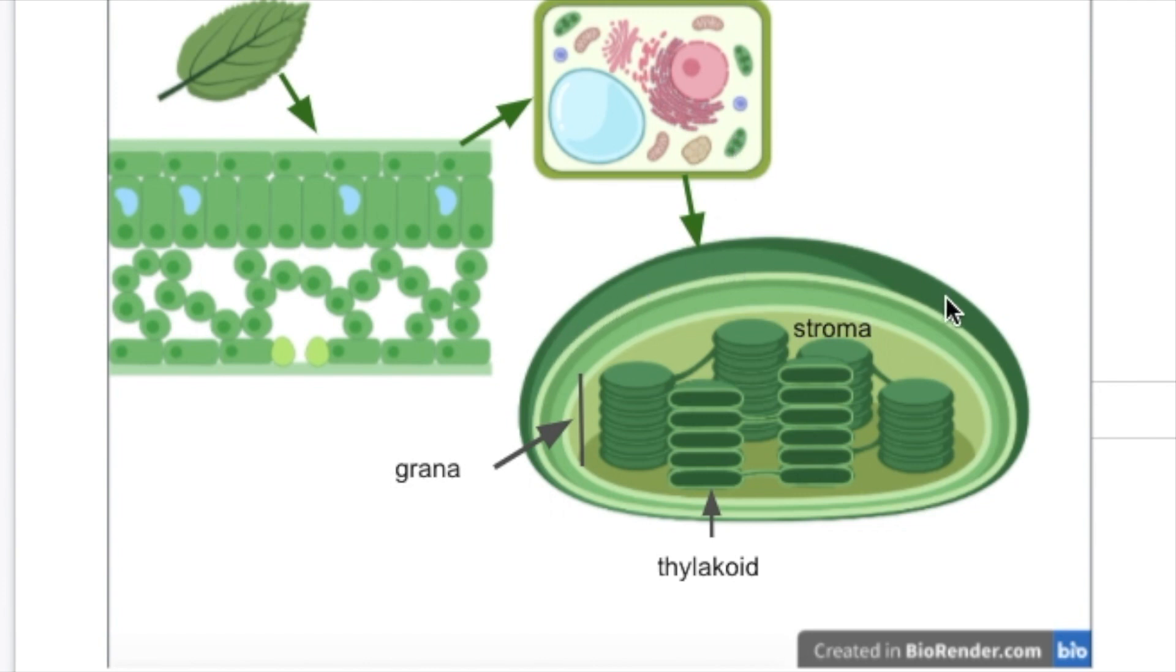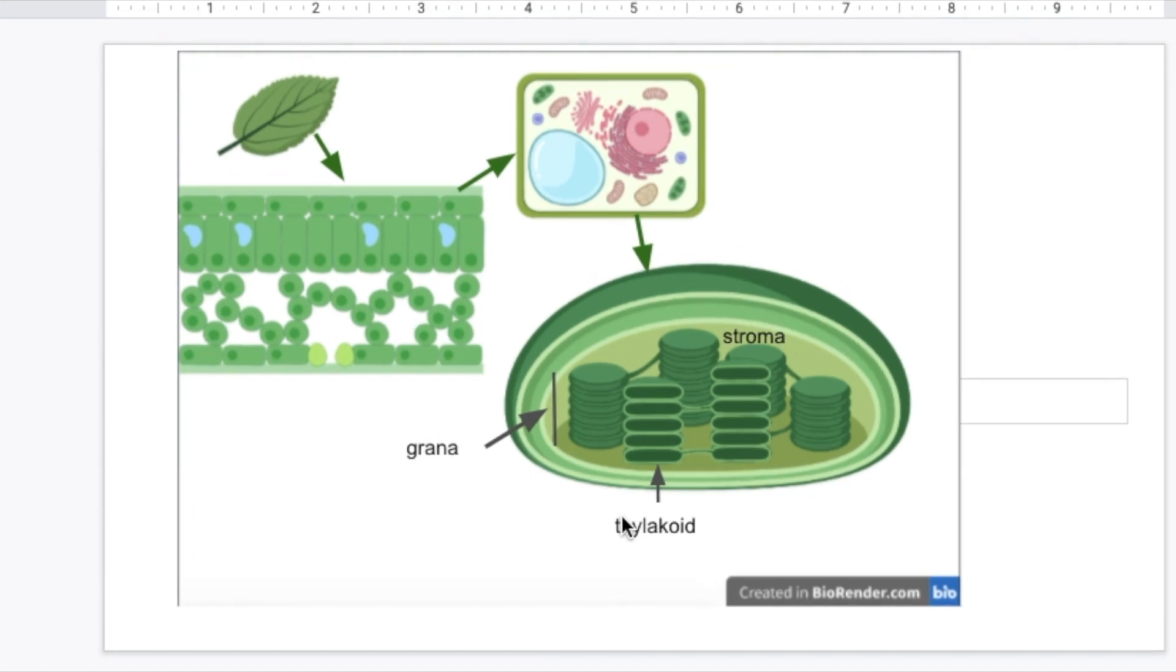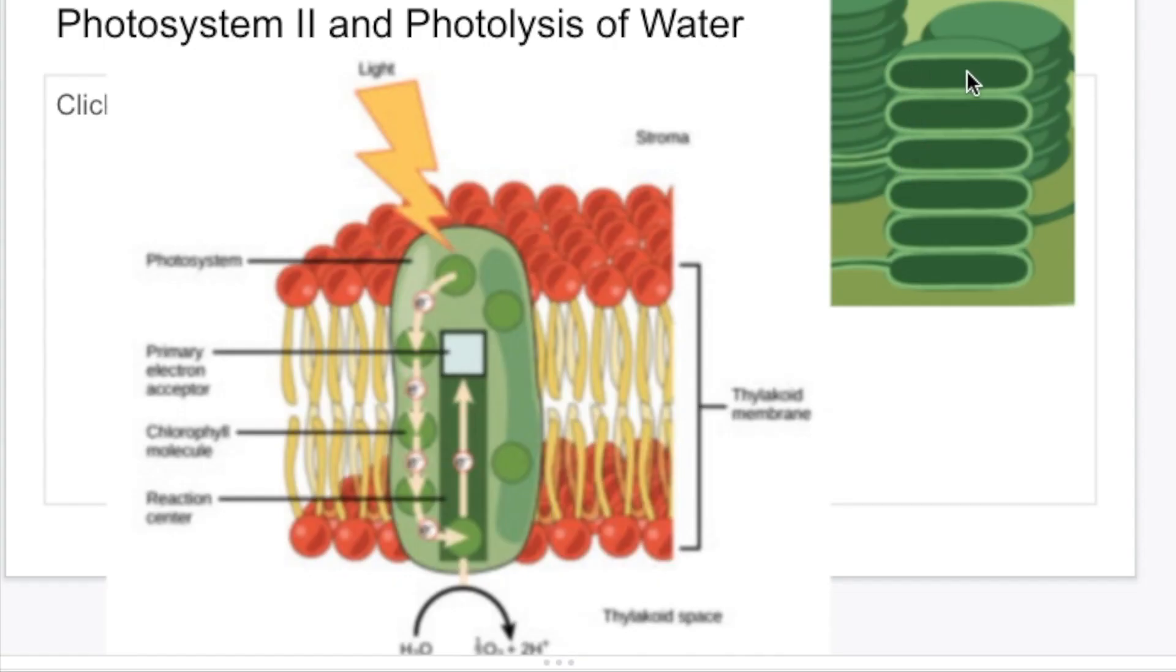They are the chloroplasts and inside of the chloroplasts you've got the fluid-filled area called the stroma and then you've got these flattened discs which together make up the grana. Each one of those stacks when you zoom in on it is referred to as a thylakoid and the thylakoid and the membrane that surrounds it is going to be our main focus. And here we see the grana with here a single thylakoid with the membrane, a double membrane going around.